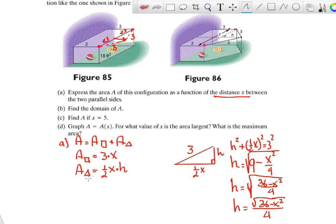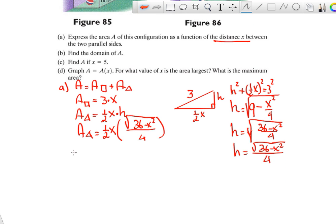So the area of the triangle is going to be a half times x times the square root of 36 minus x squared over 2. And here we said we needed to add those. So my final answer will be, so the area of the playpen is going to be the area of the rectangle, which is 3x, plus the area of the triangle. The area of the triangle is a half times x times the square root of 36 minus x squared.